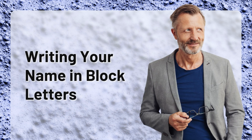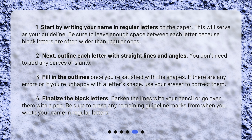Writing your name in block letters. Step 1: Start by writing your name in regular letters on the paper. This will serve as your guideline. Be sure to leave enough space between each letter because block letters are often wider than regular ones. Step 2: Next, outline each letter with straight lines and angles. You don't need to add any curves or slants.